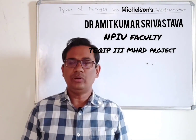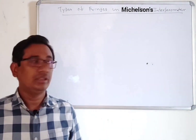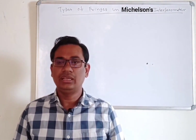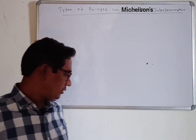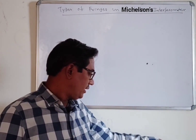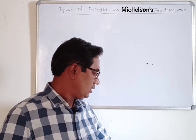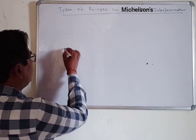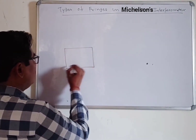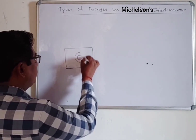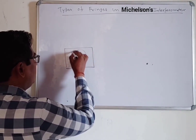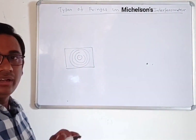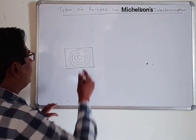In this video lecture we will discuss the different types of fringes in a Michelson interferometer. There are four types of fringes we can generate: the first is known as circular fringes, which is an example of equal inclination.